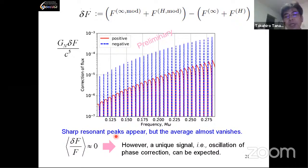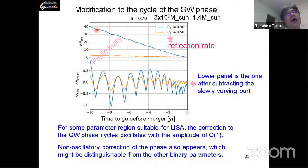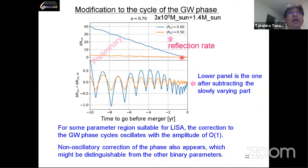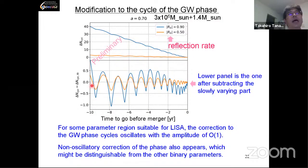Sharp resonance peaks appear but the average almost vanishes. However, there is a unique oscillatory signal that can be expected. We calculated the phase evolution change from the GR case. There is some slowly varying trend which might be confused with other effects, but if we subtract this slowly varying part, we obtain an oscillation. The amplitude of this oscillation can be as large as order unity, so it might be detectable.